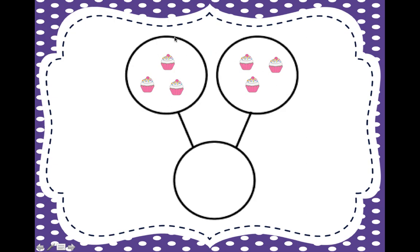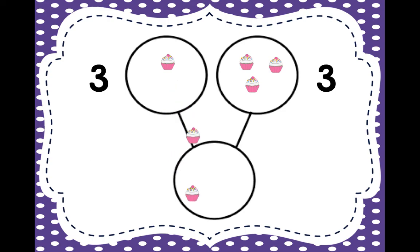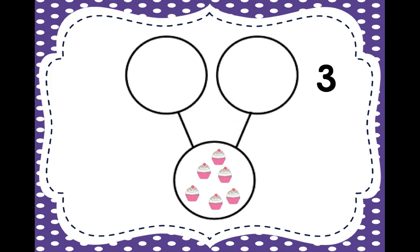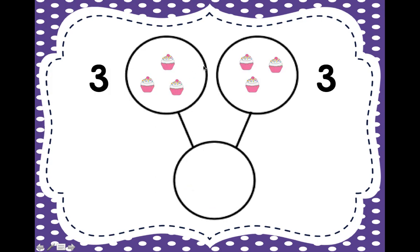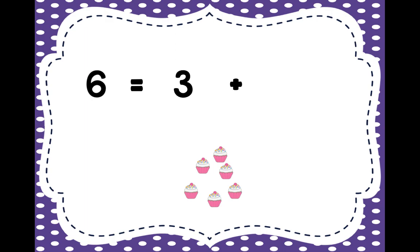Here's our last one. Ready? Over here we have how many cupcakes? Three. Over here we have how many cupcakes? Three. Now we're going to put them together. Some of you already know three plus three — but let's do this problem together. One, two, three. And one, two, three. When we put them together, now we have one, two, three, four, five, six cupcakes. If I split them back up at the top, over here we have three and over here we have three. Together they make six. When we write our equation, we have six is equal to three plus three.